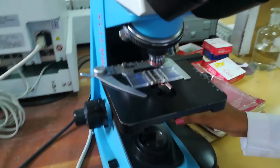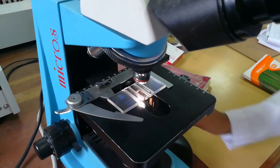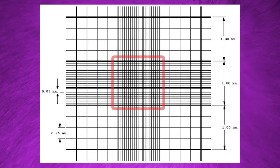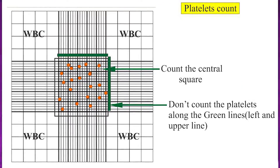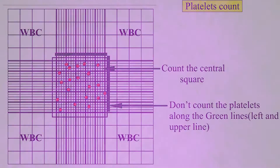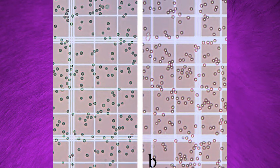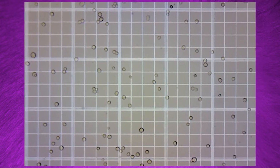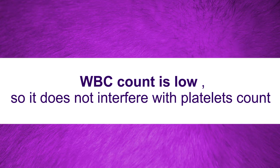Focus on the ruled area of the counting chamber under the 10× objective, then count the platelets in the middle large square — that means all 25 small squares — using the 40× objective, and lower the condenser to reduce light intensity. In this case, platelets appear as highly refractile particles. White blood cells count is low, so they do not interfere with the platelet count.